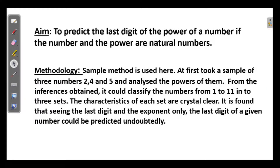Aim: To predict the last digit of the power of a number, if the number and the power are natural numbers. Methodology: Sample method is used here. At first, took a sample of 3 numbers — 2, 4, and 5 — and analyzed the powers of them. From the inferences obtained, it could classify the numbers from 1 to 11 into 3 sets. The characteristics of each set are crystal clear. It is found that, seeing the last digit and the exponent only, the last digit of a given number could be predicted undoubtedly.